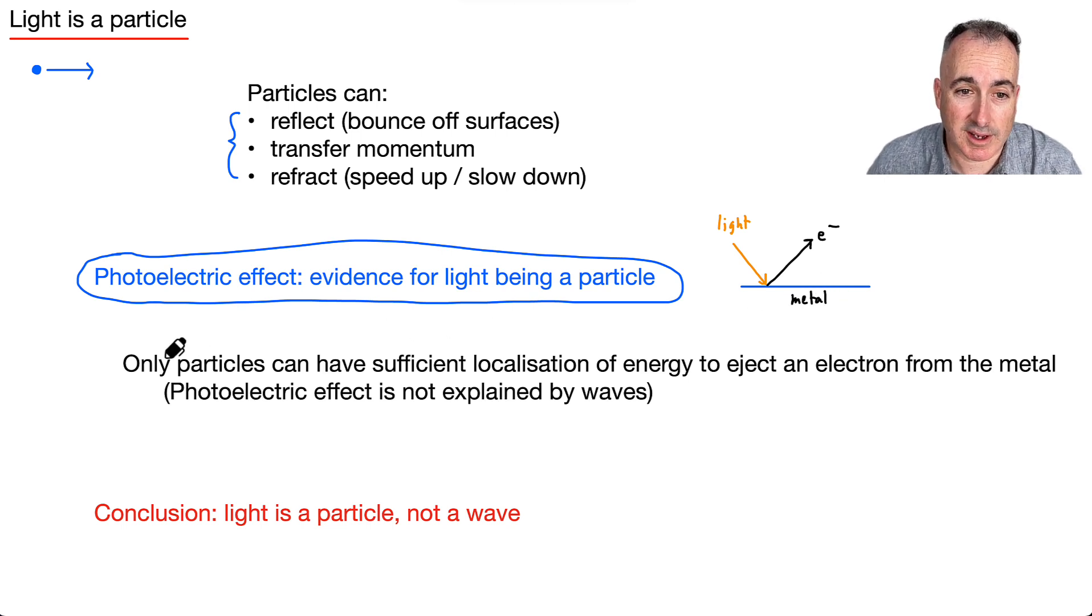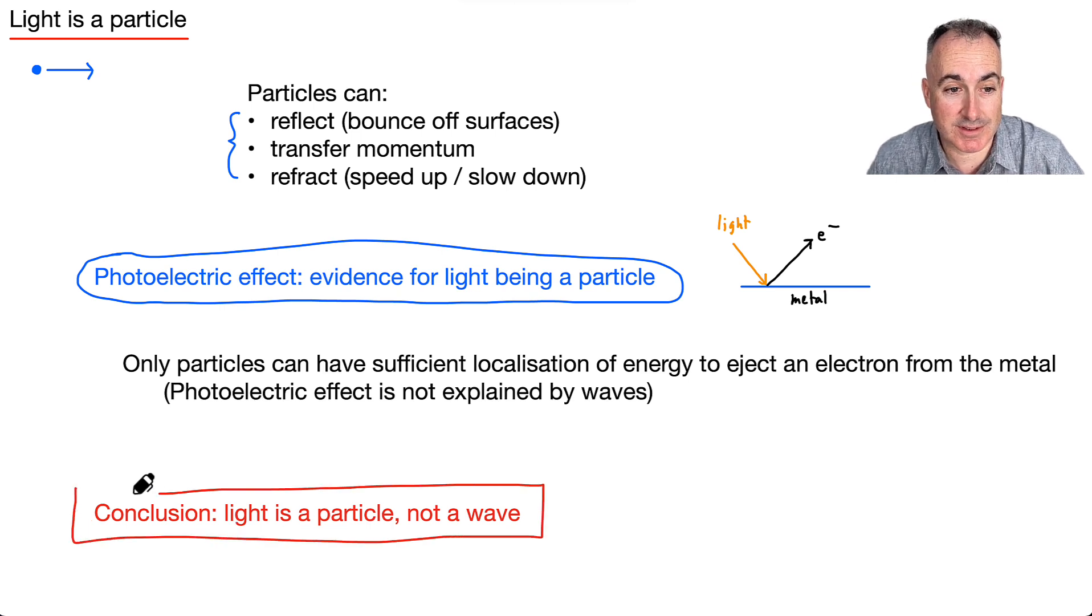All right, well, only particles, they're the only ones who can have a sufficient localization of energy to kick off an electron from the metal. It's not explained by waves. Like a wave can't do this. So that means, hey, great, we got a conclusion. Light is a particle. It cannot be a wave. So we've solved it. Hooray.